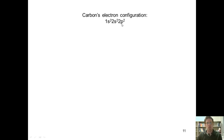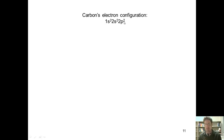Now as you should have learned back in general chemistry, every element has its own electron configuration. Carbon's electron configuration is 1s2, 2s2, 2p2. Carbon's valence orbitals are the ones with the highest number — this 2s orbital and this 2p orbital. You count up the number of electrons occupying those, and it adds up to four. So carbon has four total valence electrons.